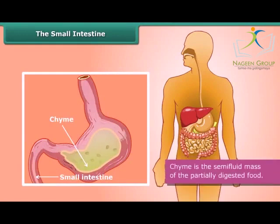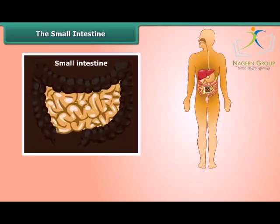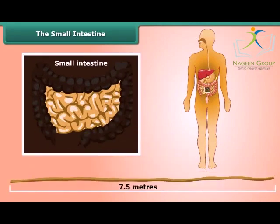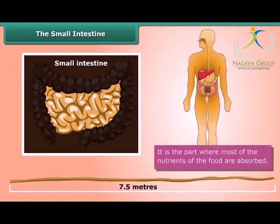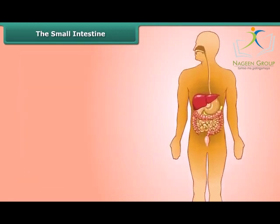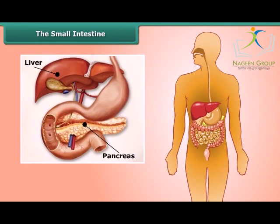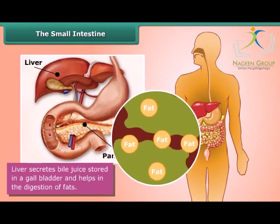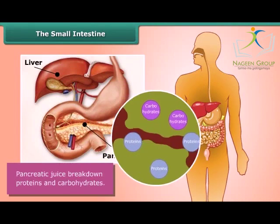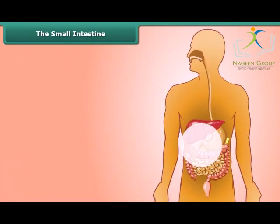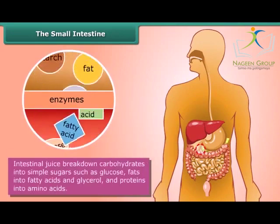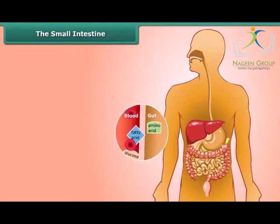After about four hours in the stomach, food changes to chyme and moves into the small intestine. The small intestine is the longest part of our digestive system — about seven point five meters long and highly coiled. Most nutrients are absorbed here. The liver secretes bile juice stored in the gallbladder, which helps in the digestion of fats. Pancreatic juice breaks down proteins and carbohydrates. Intestinal juice breaks down carbohydrates into simple sugars such as glucose, fats into fatty acids and glycerol, and proteins into amino acids, completing digestion. The digested food then passes into the bloodstream.